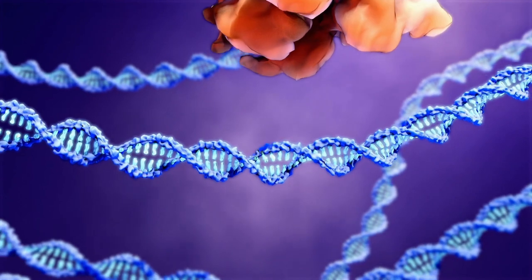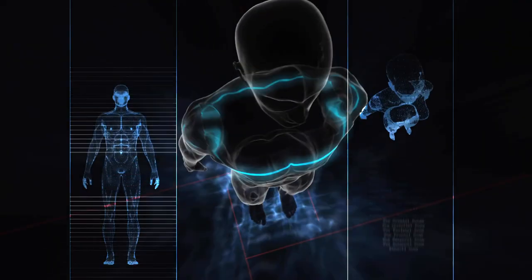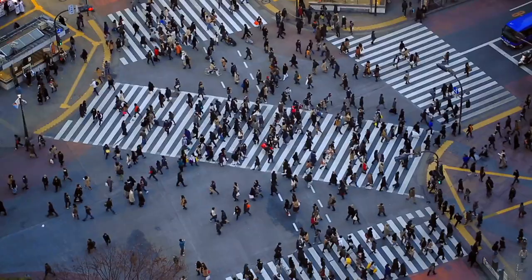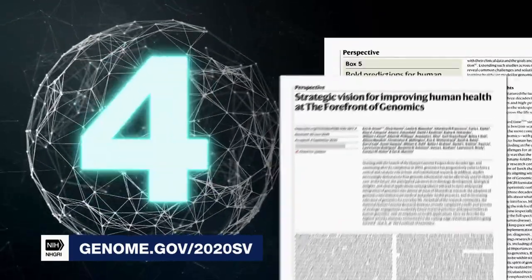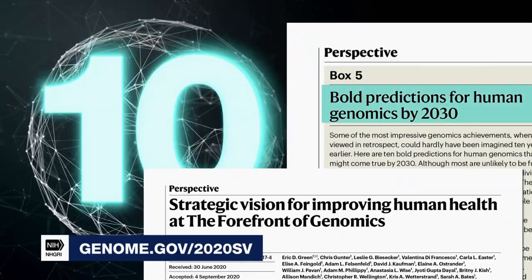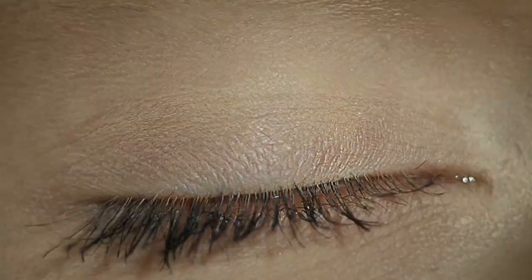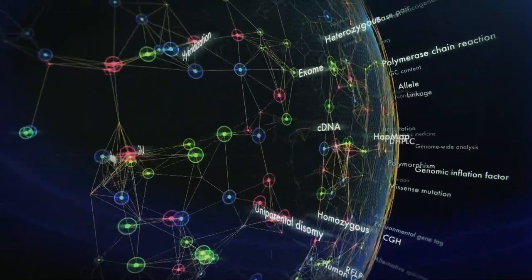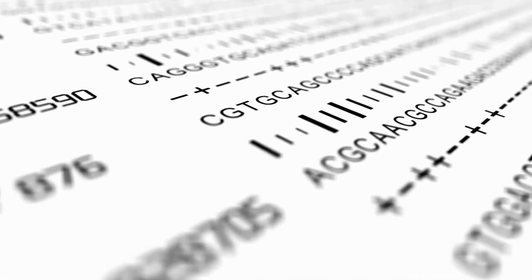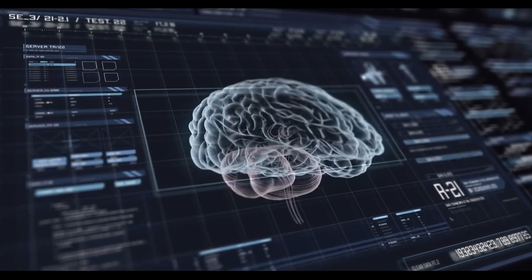Springing forward from the success of the Human Genome Project, a massive reduction in the cost of sequencing a human genome, and the dawn of the CRISPR gene editing era, genomics is leading into an even more audacious future — a future that will define our collective lives for decades to come. Here is a summary of 10 bold and fantastical predictions made by experts at the National Human Genome Research Institute and the genomics community for the next decade of human genomics. While most are unlikely to be fully attained by 2030, achieving even one or more would have lasting impact for science, medicine, and society.